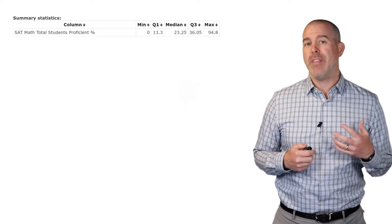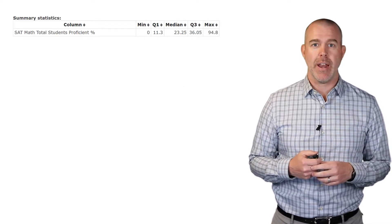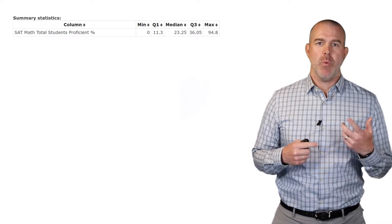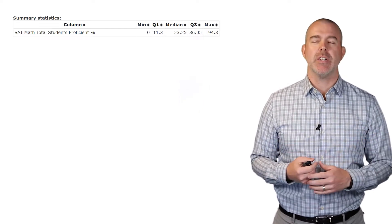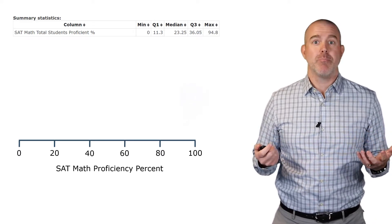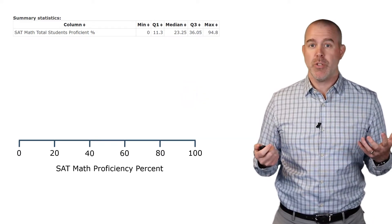We're going to start with this SAT data from the Illinois school data. I will put that link in the description. One of the variables in there was the percent of students who were proficient on the math portion of the SAT. So here we have this scale, the percent proficient from zero to 100.